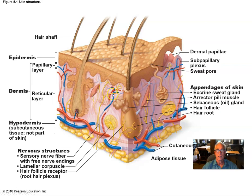There are also Meissner's corpuscles — encapsulated dendrite structures in the dermis that serve as sensitive touch receptors. And there are hair follicle receptors: free nerve endings of dendrites wrapped around the bulb of the hair follicle, so the slightest perturbation of the hair will cause movement of the follicle and sensation.